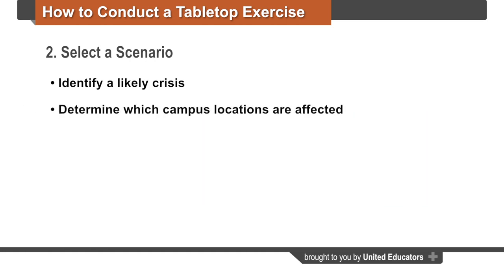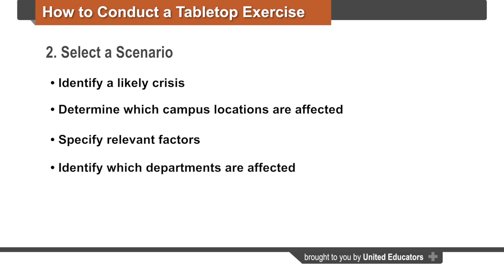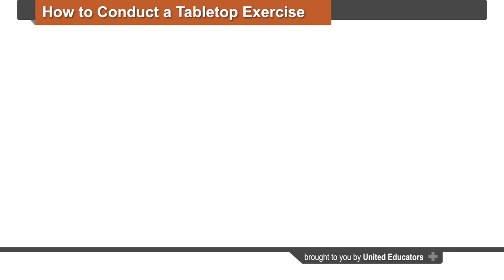Next, determine which campus locations could be affected by the scenario. What time factors, such as day and month, apply? Could other factors affect the severity of the crisis, such as a key campus official being out of town? And lastly, identify which departments would be affected by and therefore are important to testing the scenario.